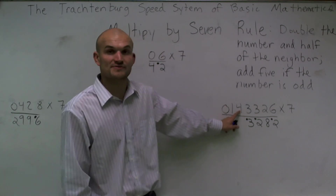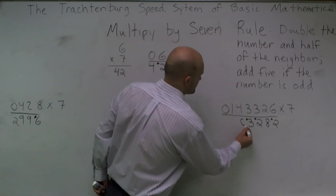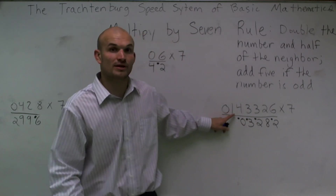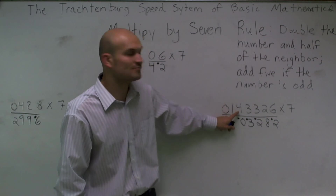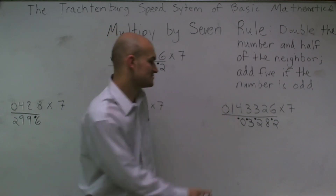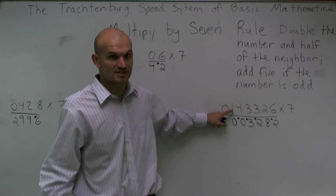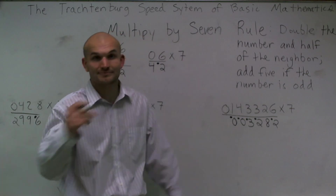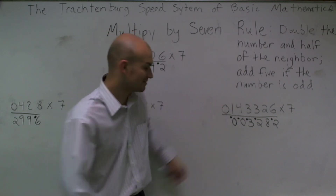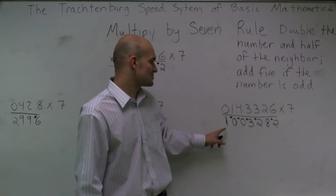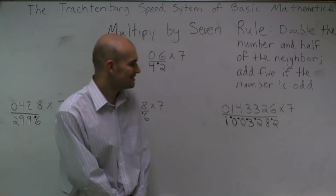Now I take a look at 4. I double it, which gives me 8. Add half of my previous neighbor, which is 9 — wait, I add my carried 1 to get 10. Then I take 1 — it's odd, so I double it to get 2, add 5 to get 7, add half of my previous neighbor, which gives me 9, plus the carry of 1 gives me 10 — writing 0 and carrying 1. Then I take 0, double it to get 0, add half of my neighbor which is also 0, but then I have my carried-over 1, so that gives me 1. My final answer is 1,003,282.